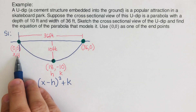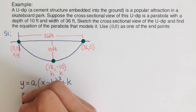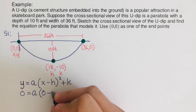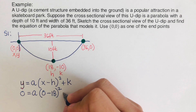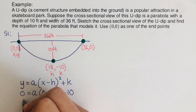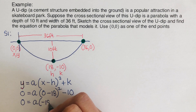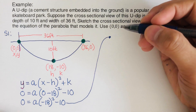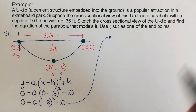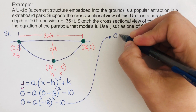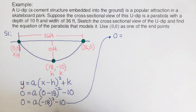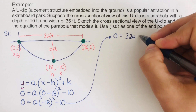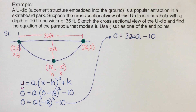Plugging into y = a(x − h)² + k: y = 0, x = 0, h = 18, k = −10, giving 0 = a(0 − 18)² + (−10). Simplifying: 0 = a(−18)² − 10. Since (−18)² = 324, we get 0 = 324a − 10.